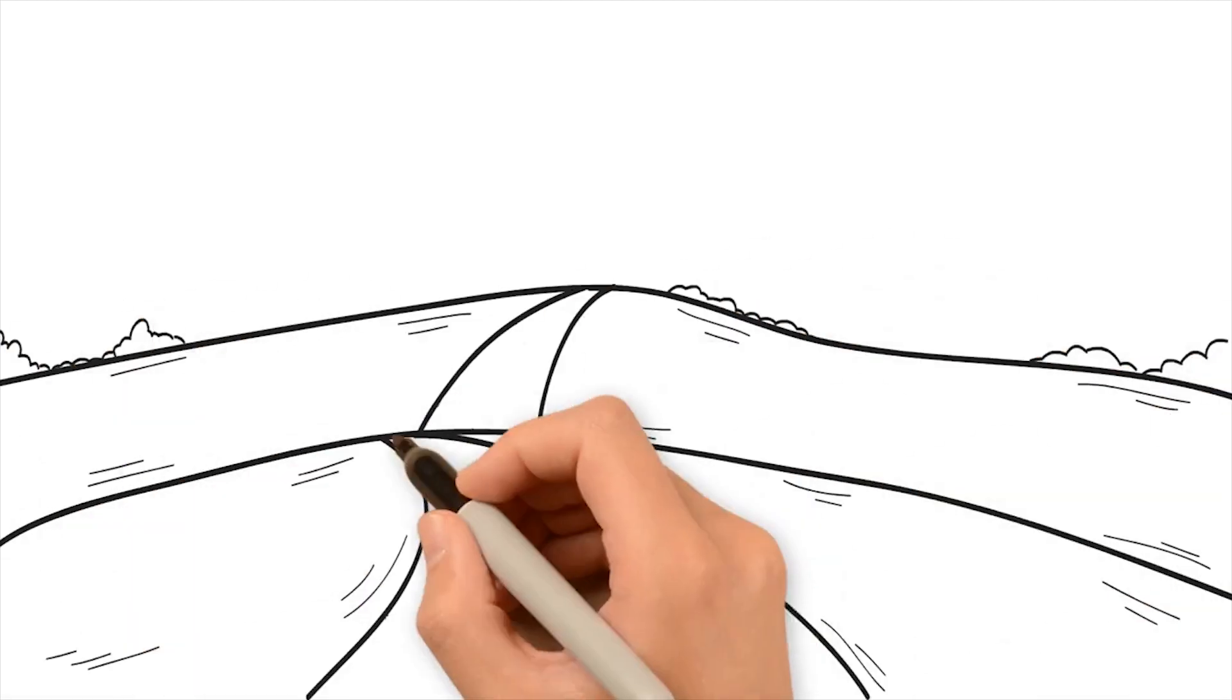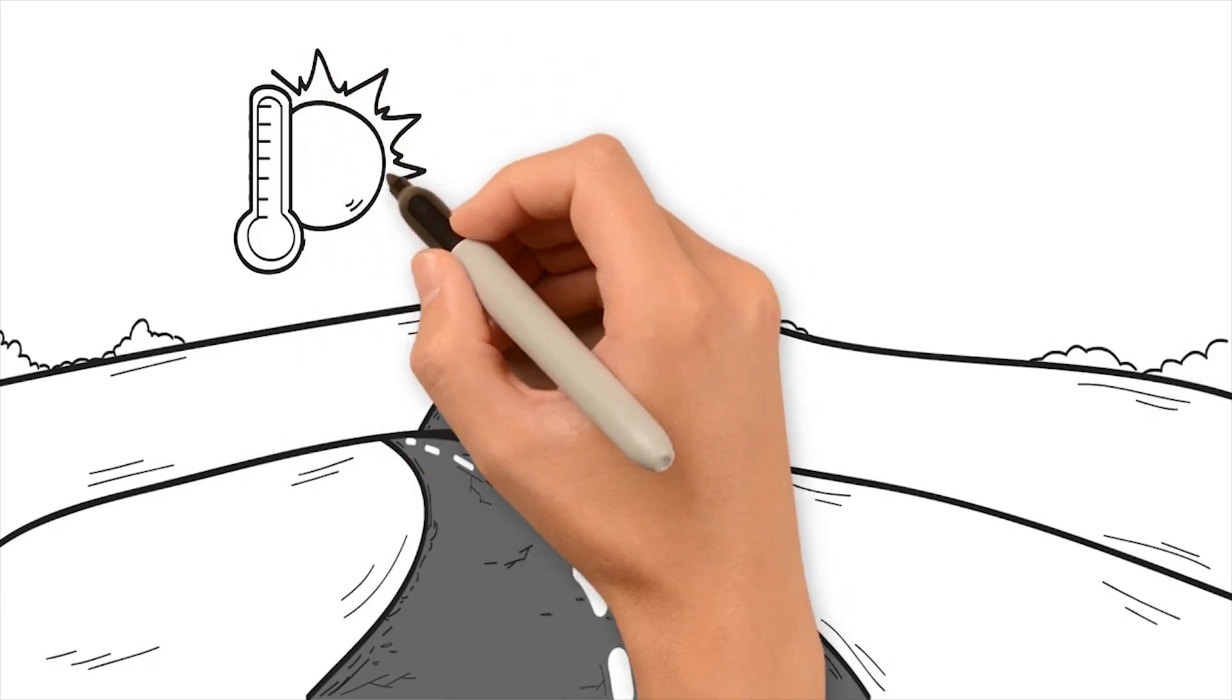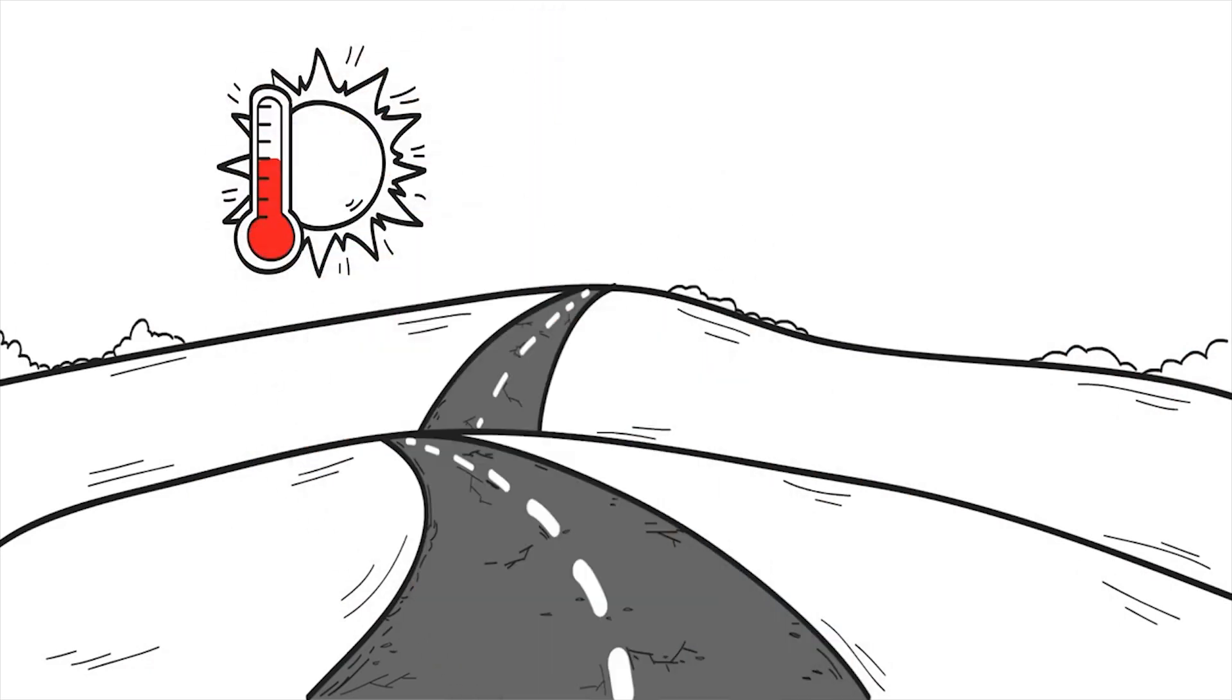Roads normally deteriorate gradually over time. The surface gradually crumbles due to natural weathering and the aging process of bitumen, which becomes more brittle with age.